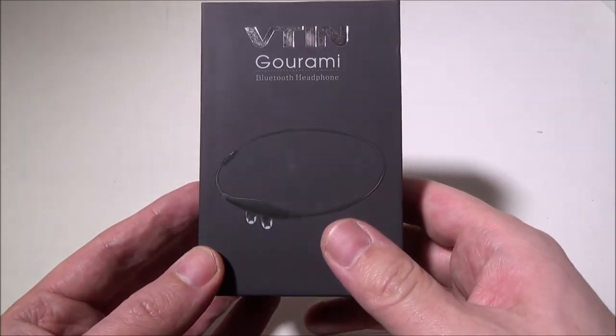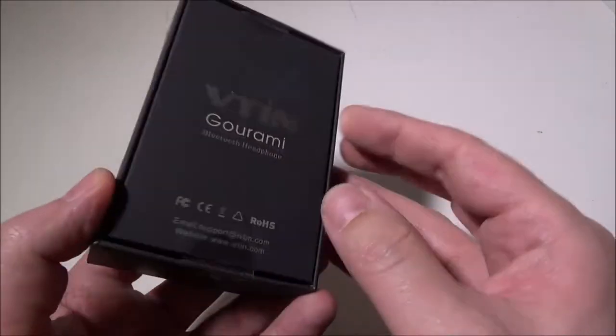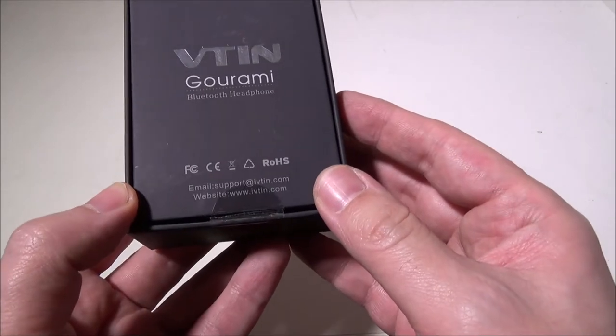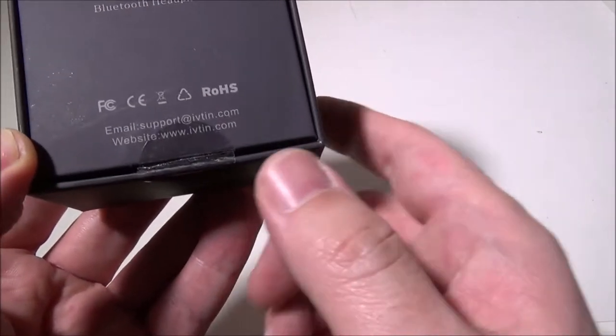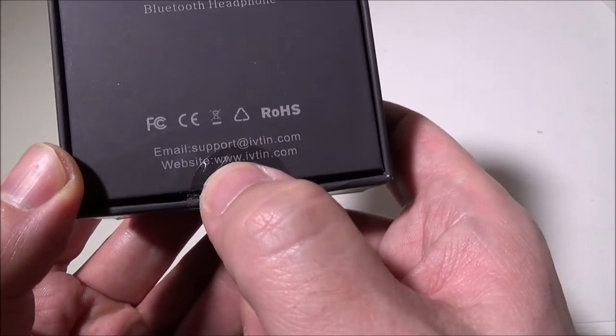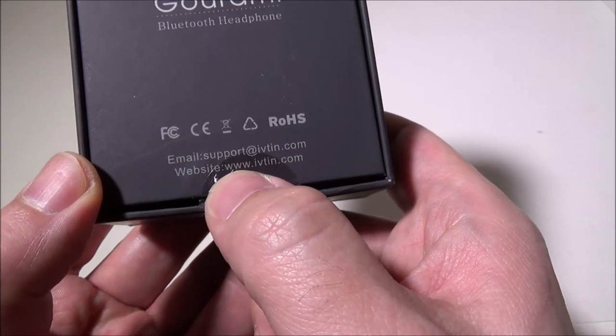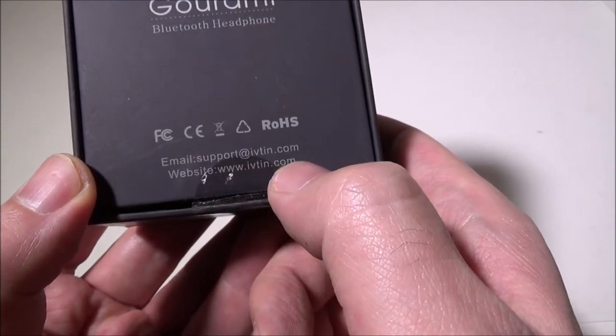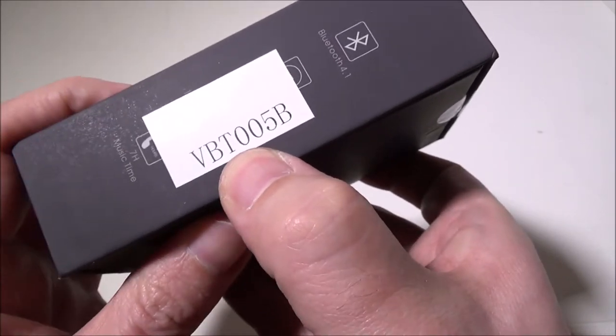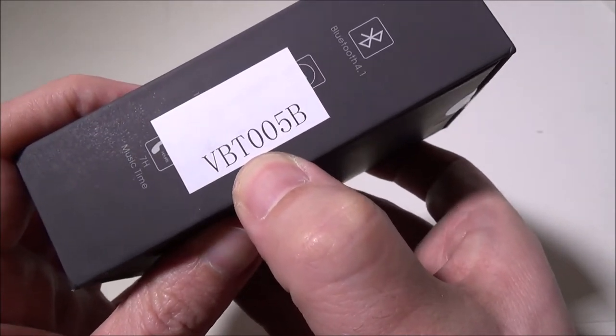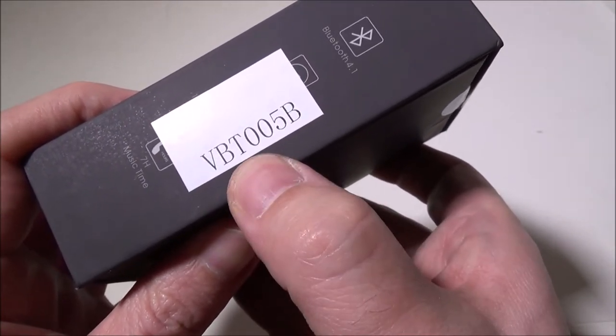Moving around the box, there's not a lot going on outside. They do have a support email and website listed at the bottom, www.ivtin.com. There is a sticker on here, and I'm going to assume that this is the model number, vbt005b.